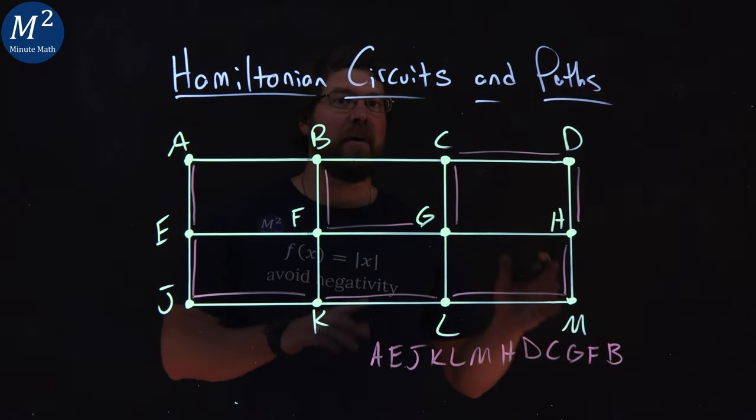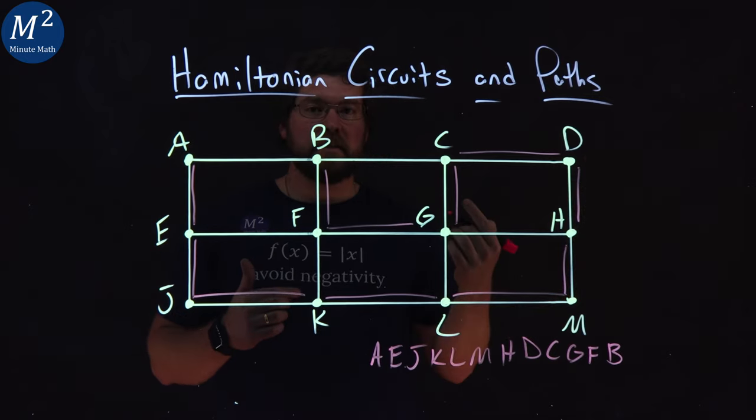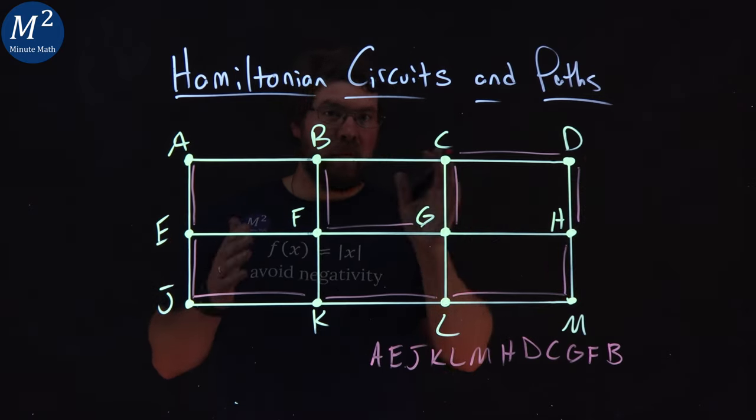And right there I have a Hamiltonian path. I visited every single vertex. We didn't repeat any vertices.